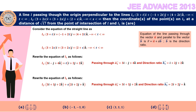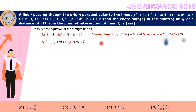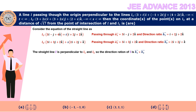Now let's find the equation of line L. Since L is perpendicular to both L1 and L2, the direction ratio of L is B1 × B2. This is because B1 × B2 is a vector perpendicular to both B1 and B2. Computing the determinant and expanding, we get B1 × B2 = −2i + 3j − 2k. So the direction ratio of L is (−2, 3, −2).